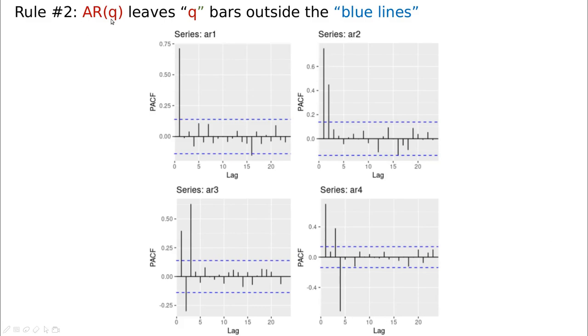So rule number two: AR(q) leaves q bars outside the blue lines. Again, AR1 is going to leave one bar, AR2 is going to leave two bars, AR3 is going to leave three bars. Take a look at the signs. Depending on the signs, they're going to be above or below, but this doesn't matter. AR4 is going to leave four bars. Now we have two tools: ACF to try to see the moving average part and PACF to try to see what happens with the autoregressive part of the model.